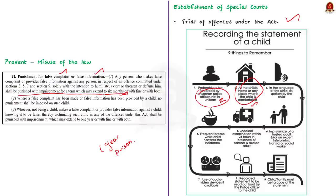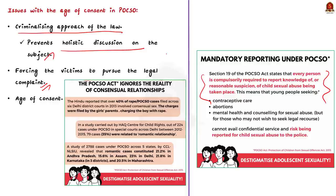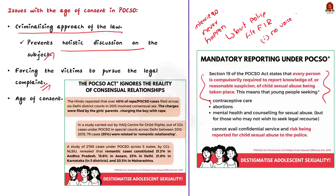Now we shall see the issues with the age of consent in POCSO. The first issue is the criminalizing approach of the law, which prevents a more holistic discussion on the subject. The second issue is forcing the victims to pursue a legal complaint. Usually when such an incident is reported, the first procedure should be an interview conducted by a social worker or support person, not the police. But every time this rule is broken — the police file an FIR first. This means the persons involved will not get a chance to express that the act was consensual, and if the act was non-consensual, police questioning can turn the victim unfriendly and hostile.